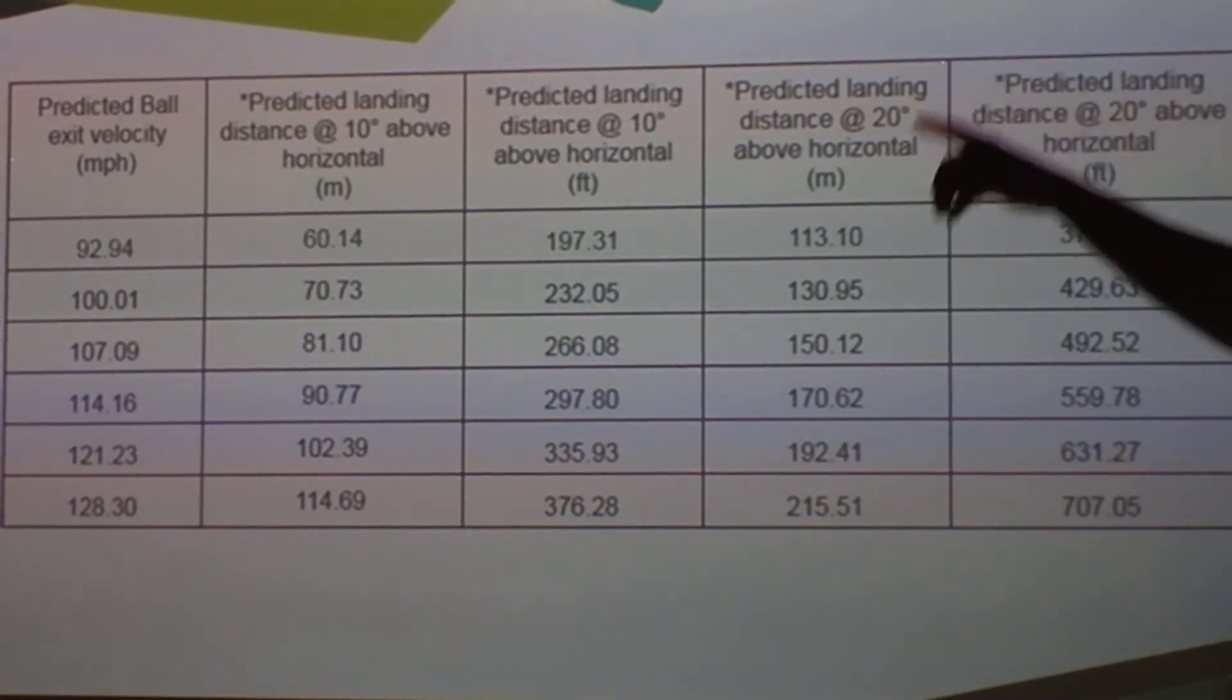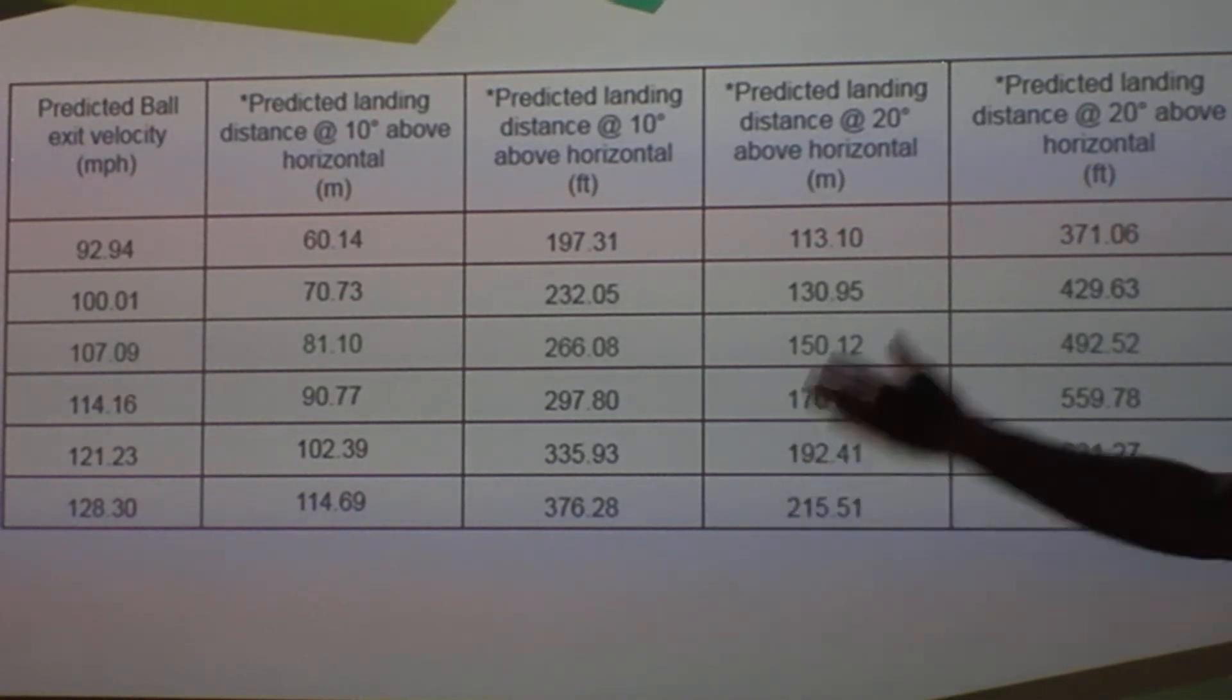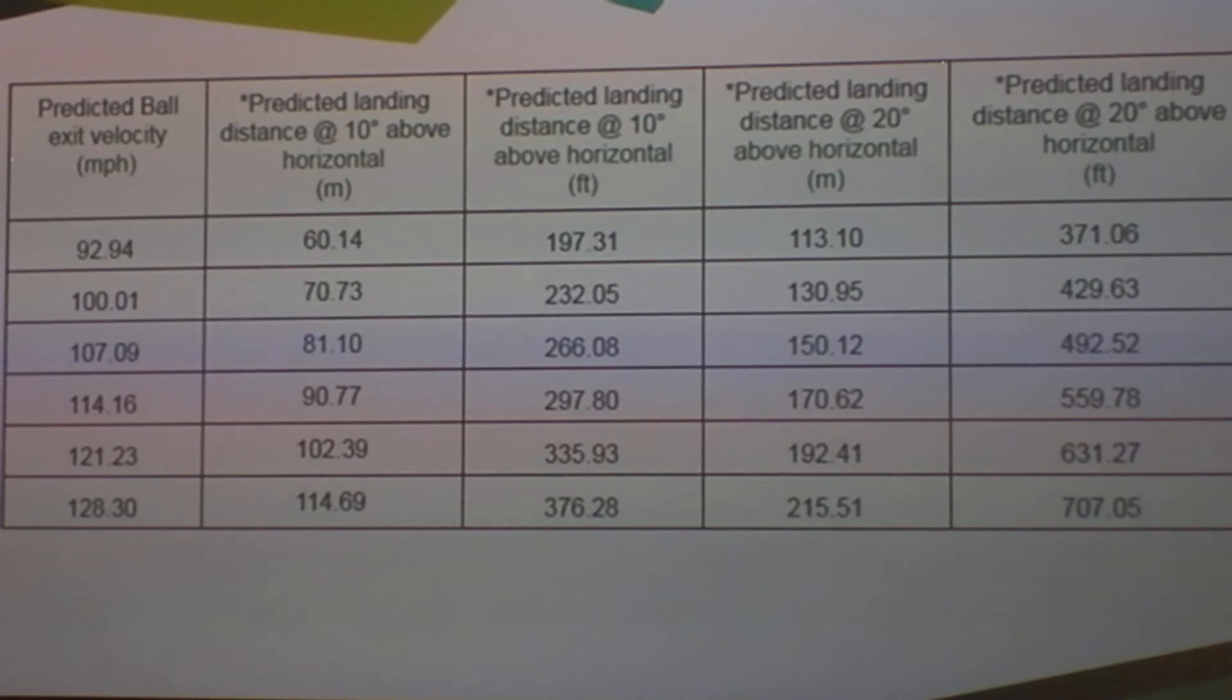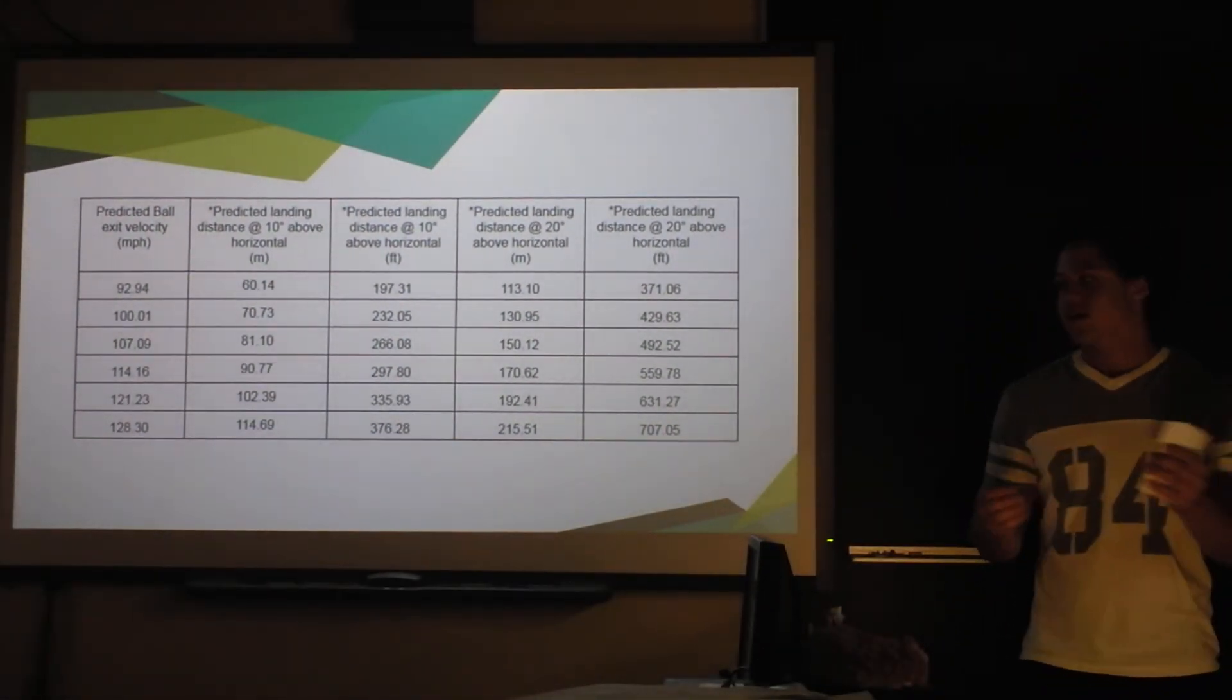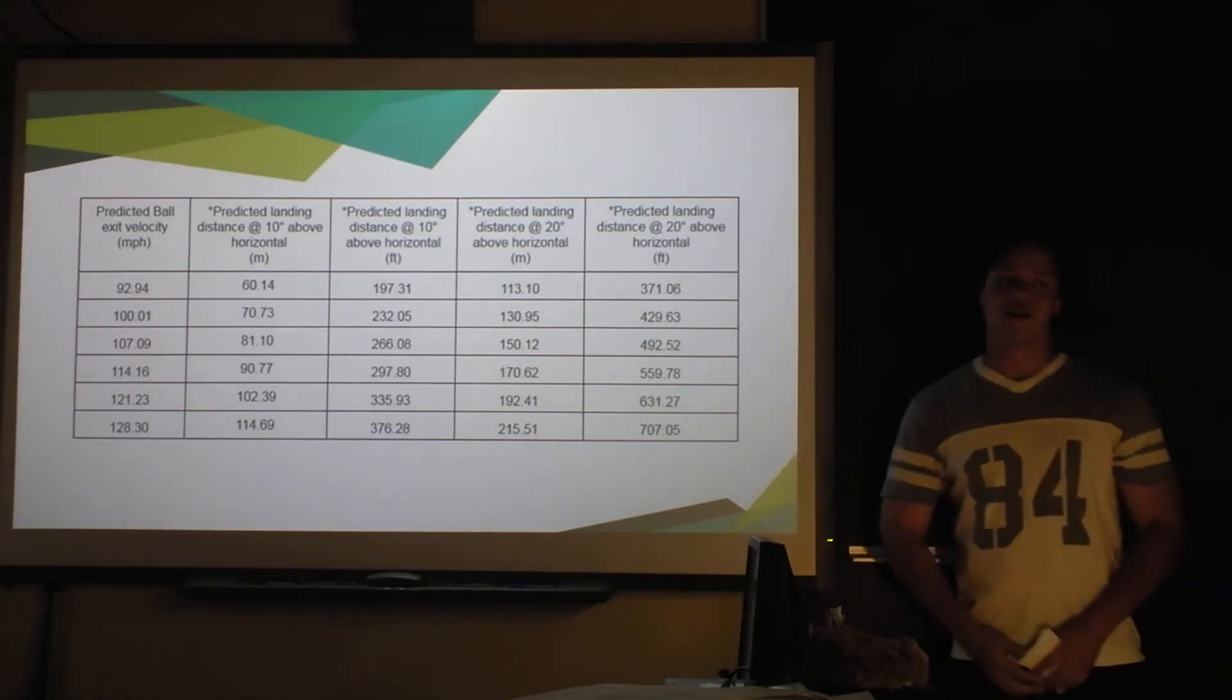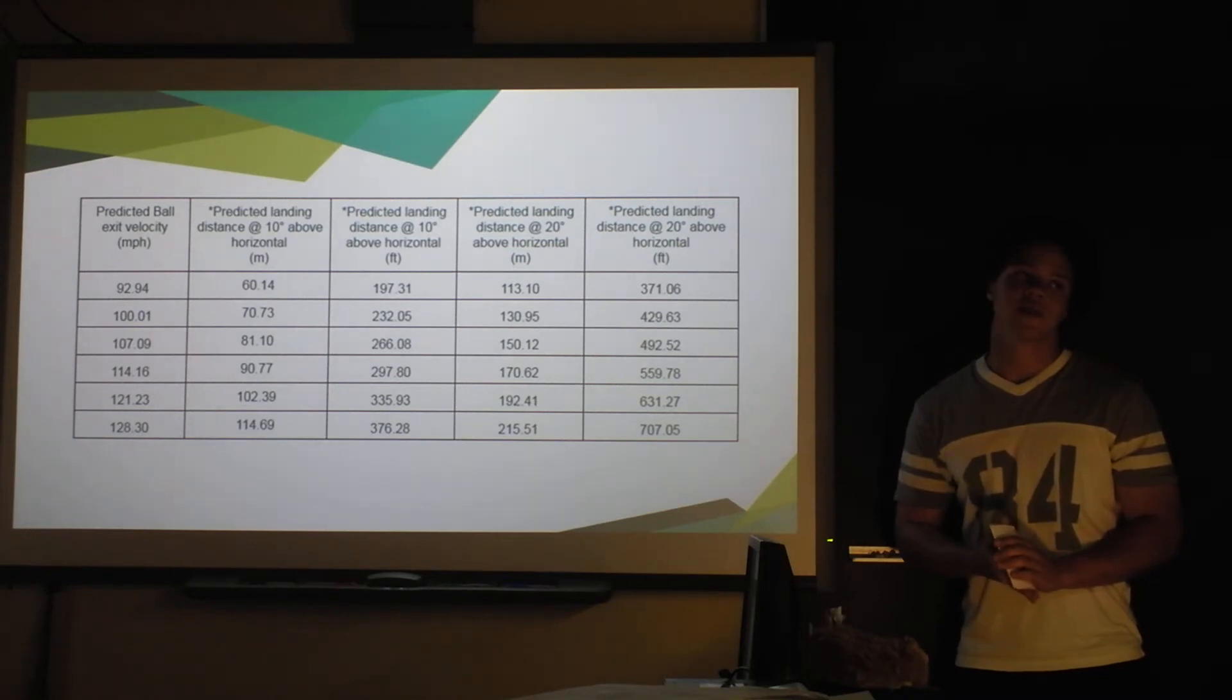And then, now what I also did is I predicted how far the ball would go if you hit it at a certain angle. So like if I hit it and the ball went up at a 10 degree angle from the horizontal, then the ball would land that far. I did it with 20 degrees too, and I had it in meters and feet, same reason. I don't really get meters that quick, I get feet better. The most surprising number is this: if you hit a ball that's coming at 100 miles an hour at 20 degrees and I square it up, that ball's going 700 feet without air resistance. Now that's crazy, because the farthest hit ever in MLB history is reportedly Mickey Mantle's, like 550 feet.